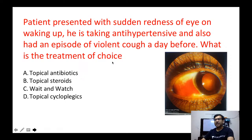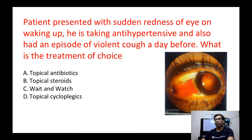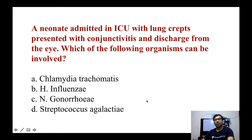Next question: a patient presented with sudden redness of eye on waking up, is taking antihypertensives, and had an episode of violent cough the day before. There is redness but no pain, inflammation, or watering. What is the treatment of choice? This patient is suffering from subconjunctival hemorrhage. Since there are no inflammatory signs, it resolves on its own. Treatment of choice is wait and watch.